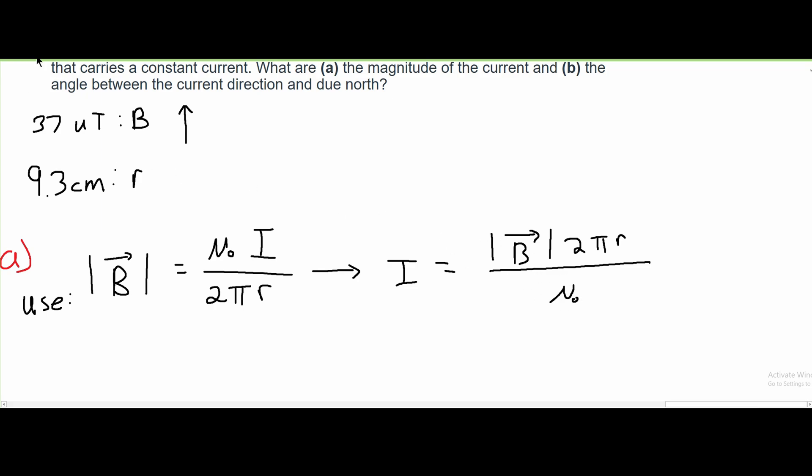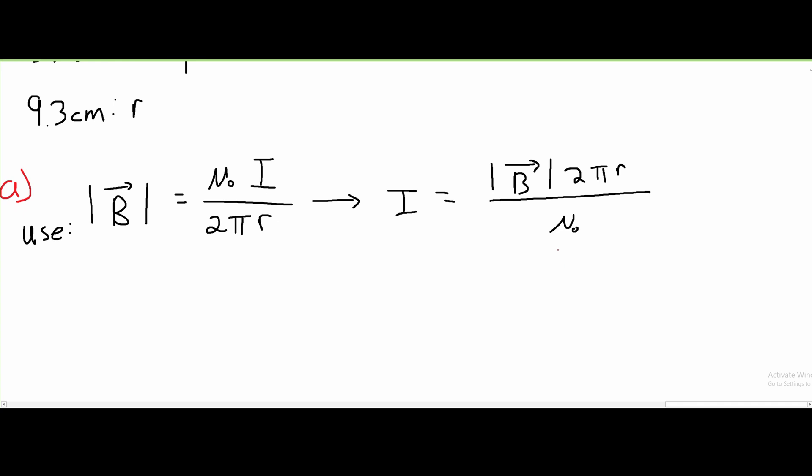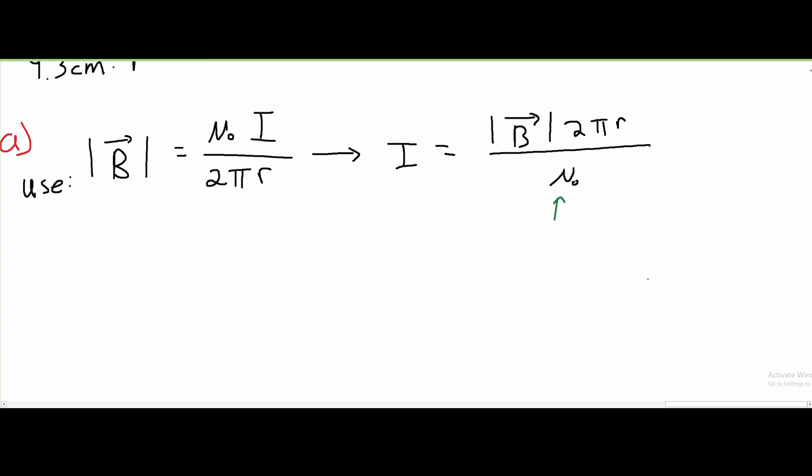We have our B, which is right here. We are given 2 pi, and we know our R. U naught is a constant, and this constant is equivalent to 4 pi times 10 to the negative 7 teslas times meters over amps.